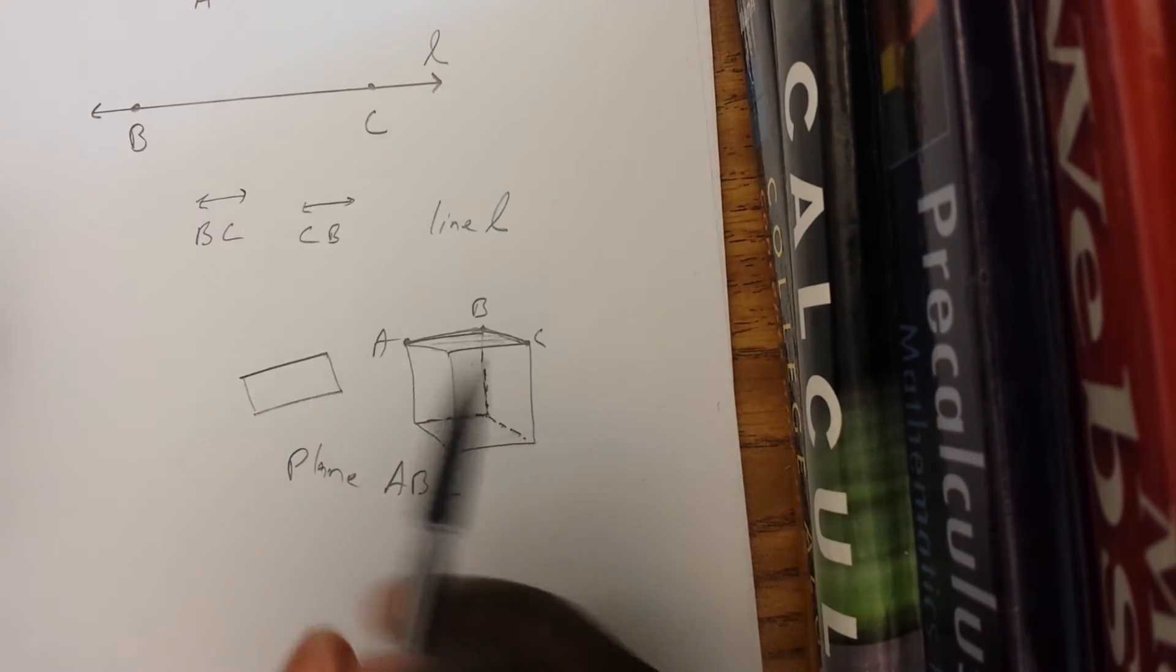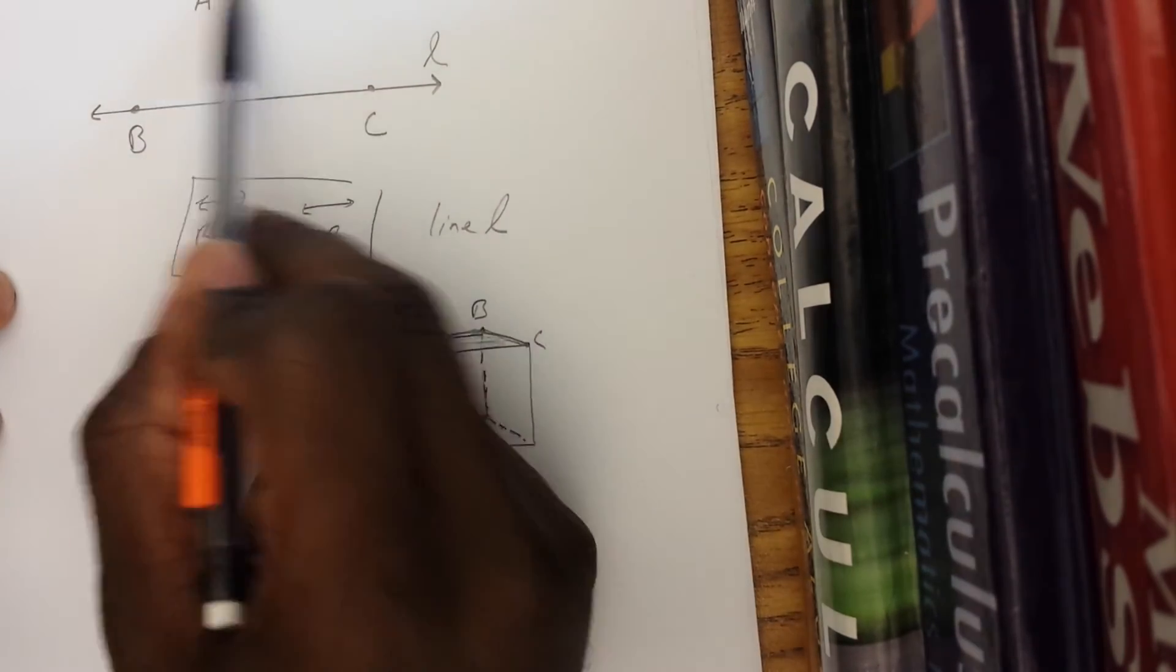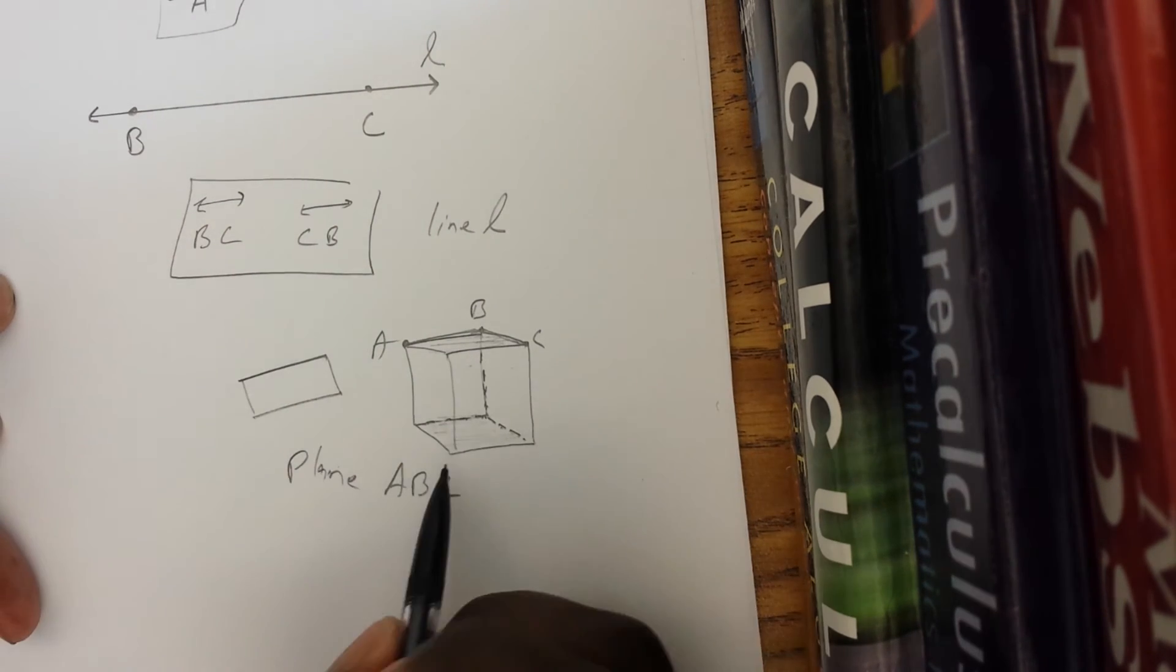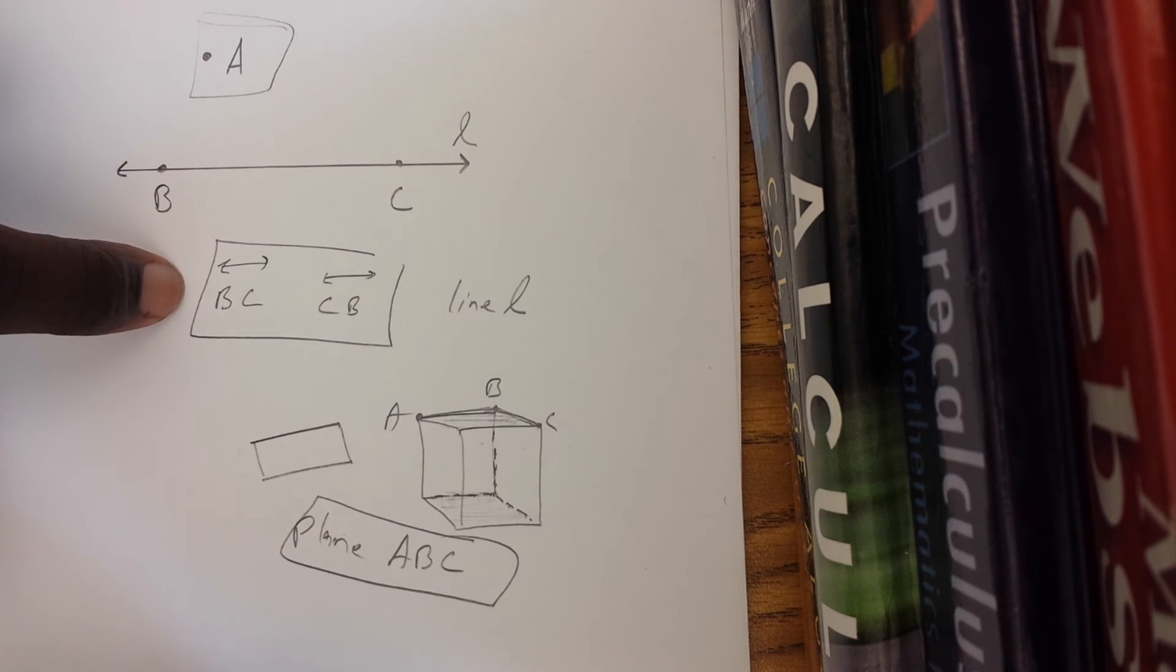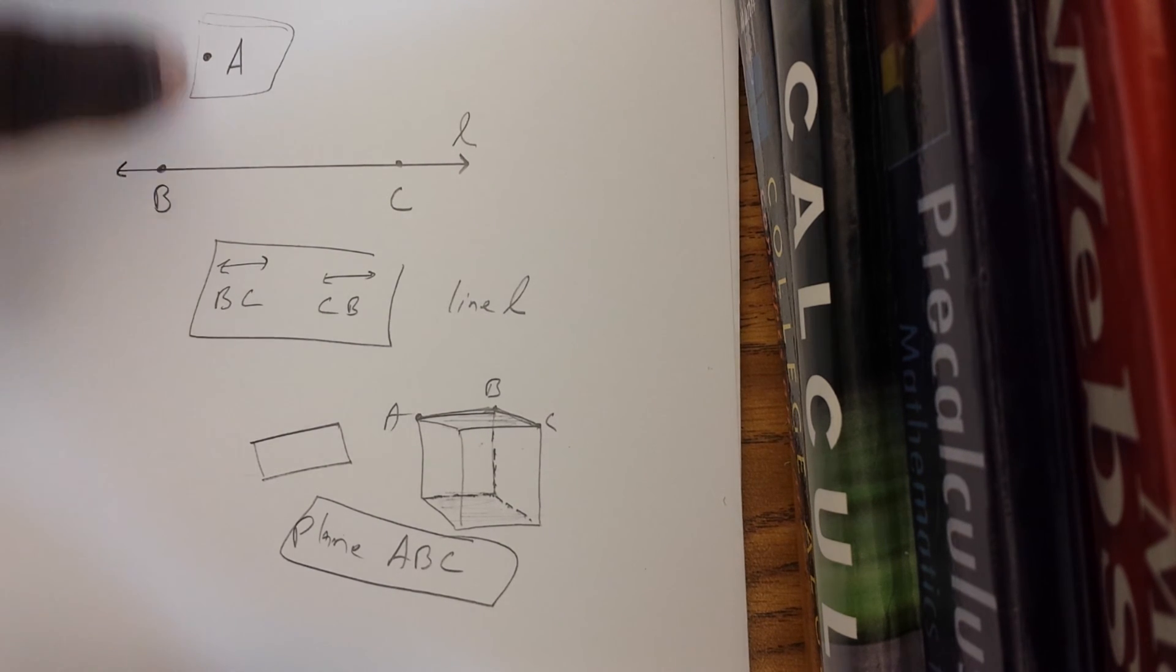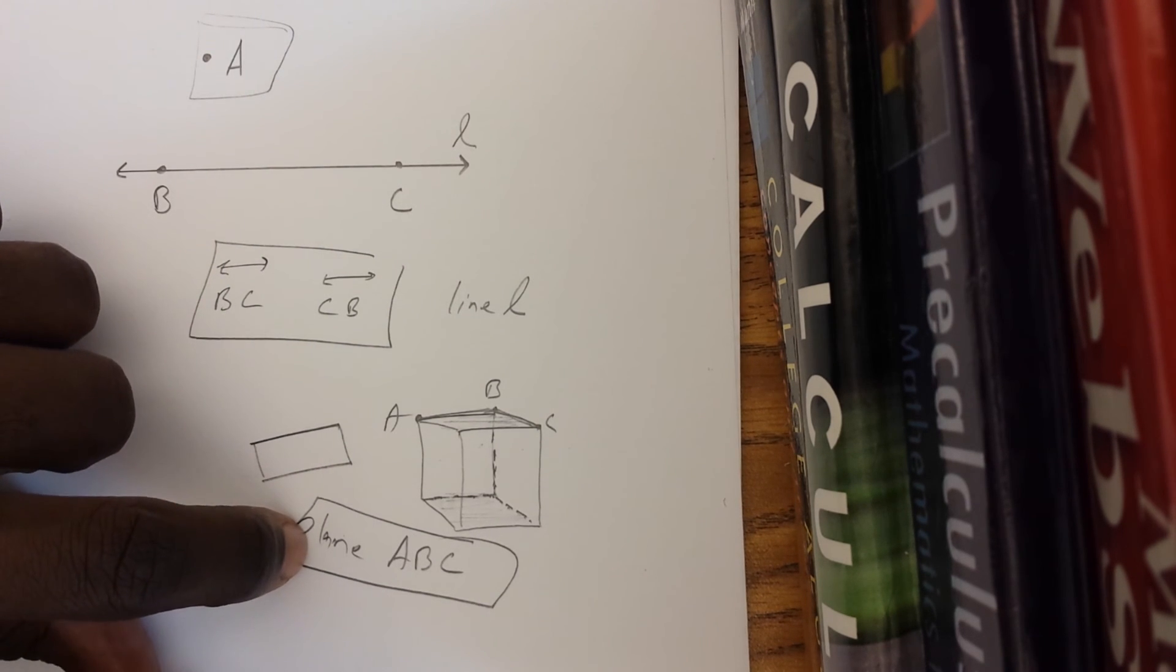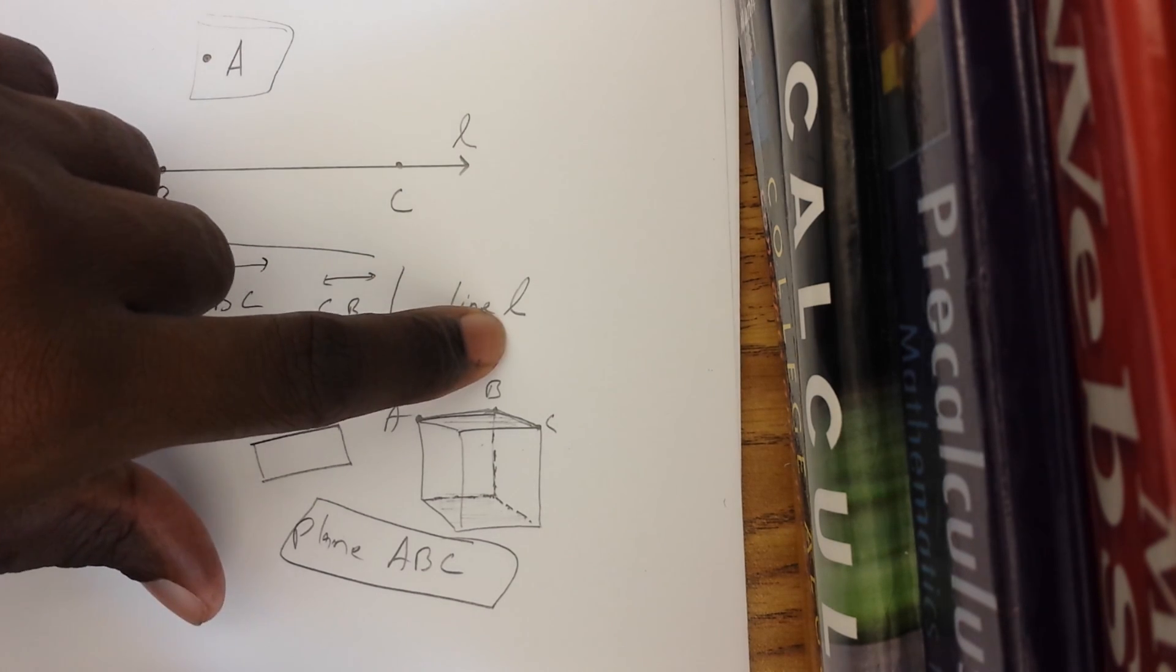So this is what you need. You need two points to name a line, one point to name a point, three points to name a plane. So write that down as a note. Two points to name a line, one point to name a point, and three points to name a plane. And also a line can be recognized as a lowercase cursive letter.